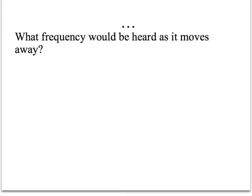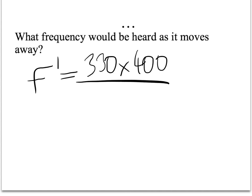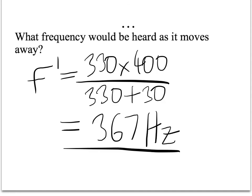So what would the frequency be if it moved away from us? Well, once again, we used the equation before, plugging in the wave speed times the true frequency on top, 400. But this time we're going to add the speed of the ambulance, which is 30, to the speed of the wave, which is 330. And I get an answer of 367 hertz. Certainly a lower frequency than the 400, and as we expect. Thank you very much.